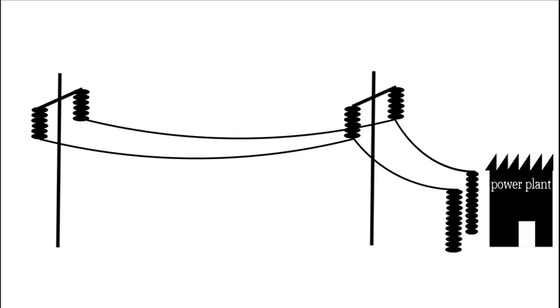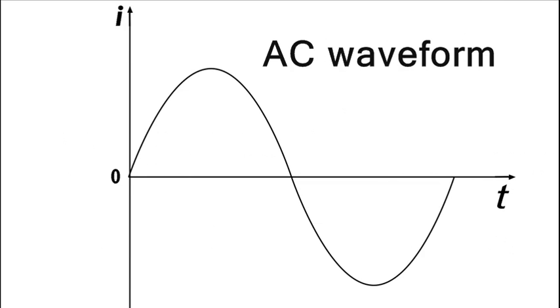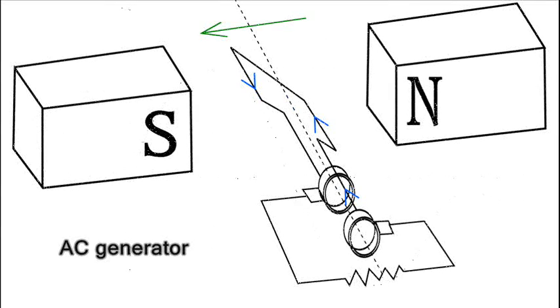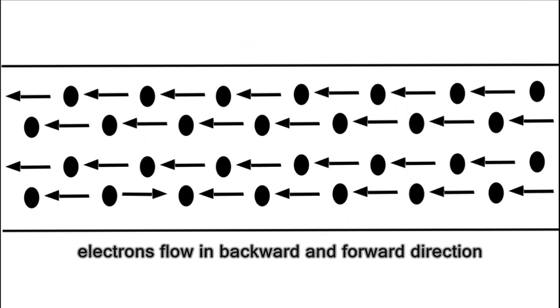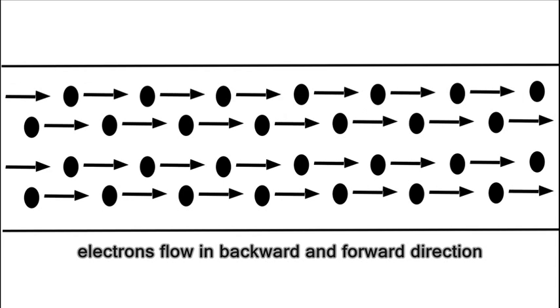The power that comes from a power plant, on the other hand, is called alternating current. AC generators or alternators produce alternating current. The direction of the current reverses, or alternates, many times per second because electrons flow in backward and forward directions.